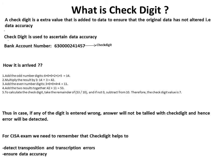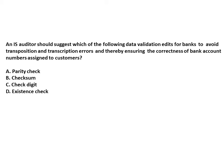For the CISA exam, remember that check digit helps to detect both transposition and transcription errors, and ensures data accuracy. In any question where the objective is to identify transposition and transcription errors, the answer should be check digit.